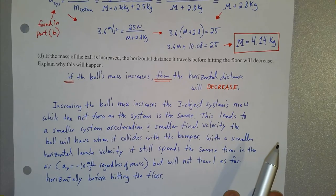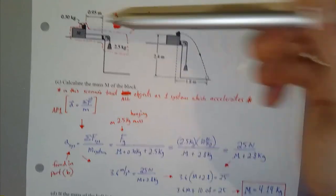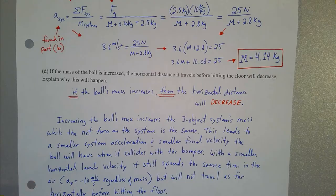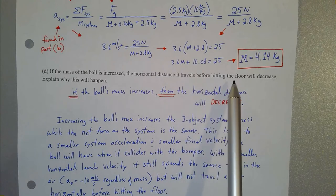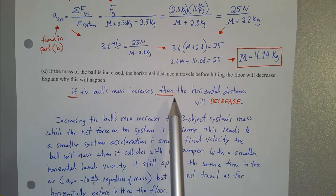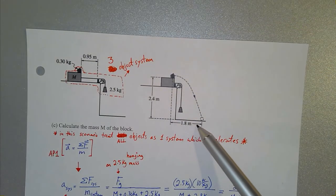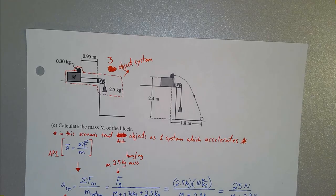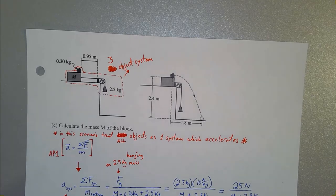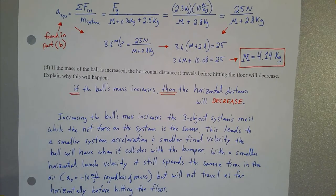The last part asks: if the mass of the ball sitting on top of the block is increased, the horizontal distance it travels before hitting the floor will decrease — explain why. If this 0.3 kilogram mass gets bigger, the ball will travel less than 1.8 meters. To answer this, we need to walk through the conceptual reasoning behind Parts A, B, and C.